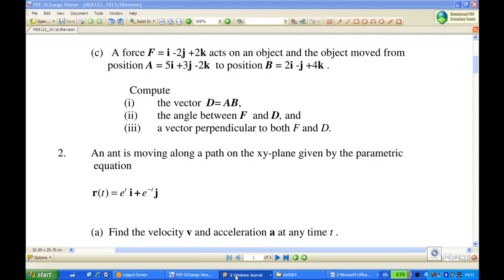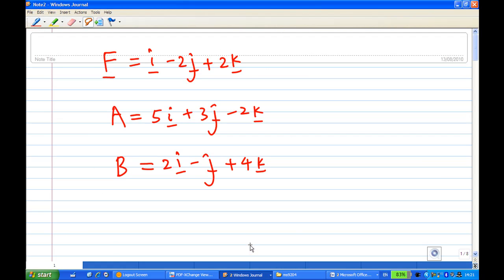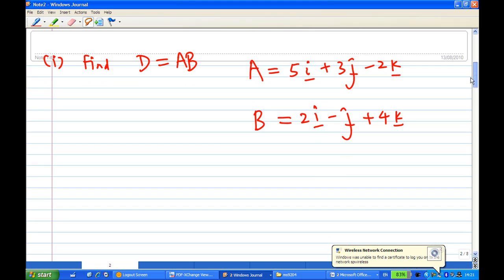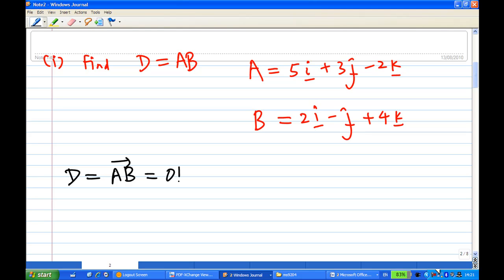Let's look at the solution now. To answer the first part, we're going to find the displacement from A to B. The displacement from A to B is actually OB minus OA. OB is the position of B, OA is the position of A. So this is 2i - j + 4k, the position of B, minus the position of A which is 5i + 3j - 2k.